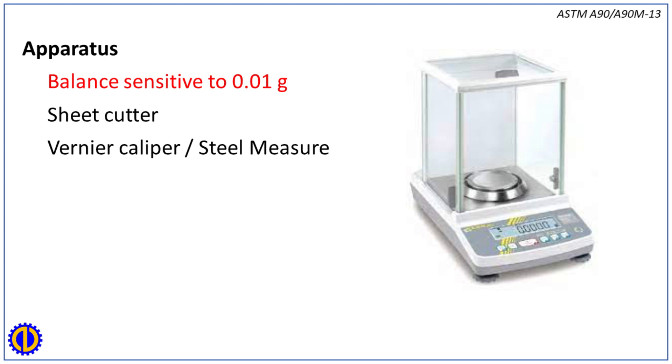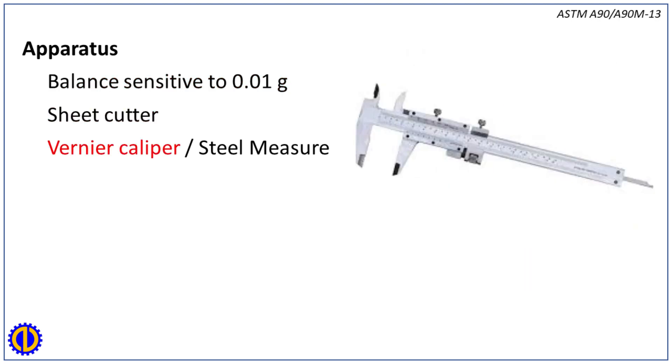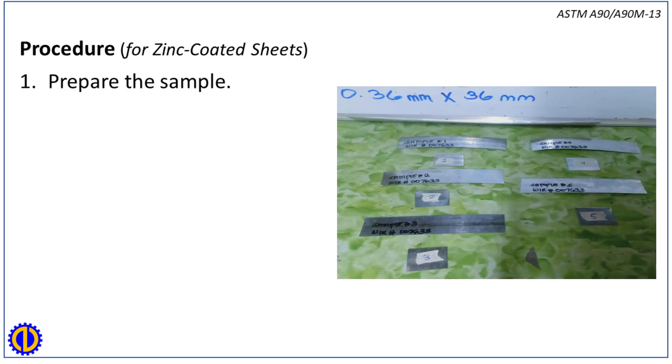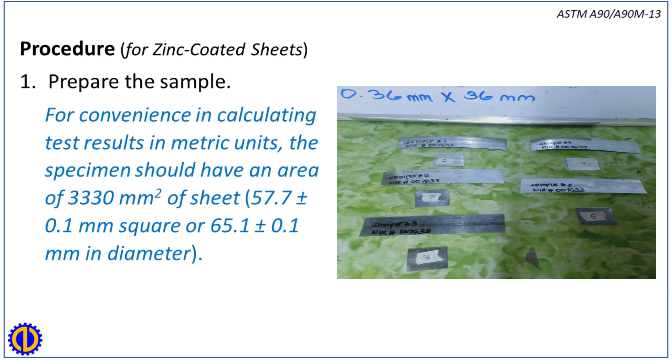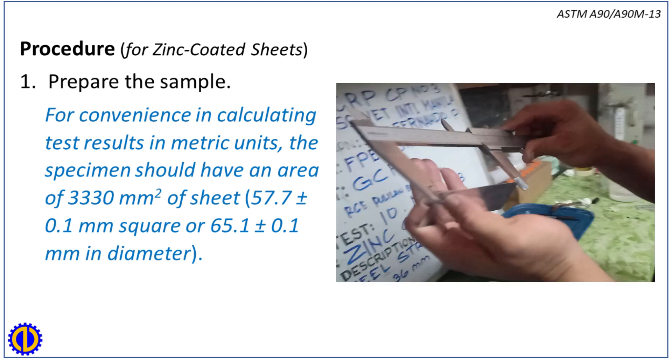Procedure for zinc coated sheets. Step 1: Prepare the sample. For convenience in calculating test results in metric units, the specimen should have an area of 3330 mm² of sheet (57.7 ± 0.1 mm square or 65.1 ± 0.1 mm in diameter).